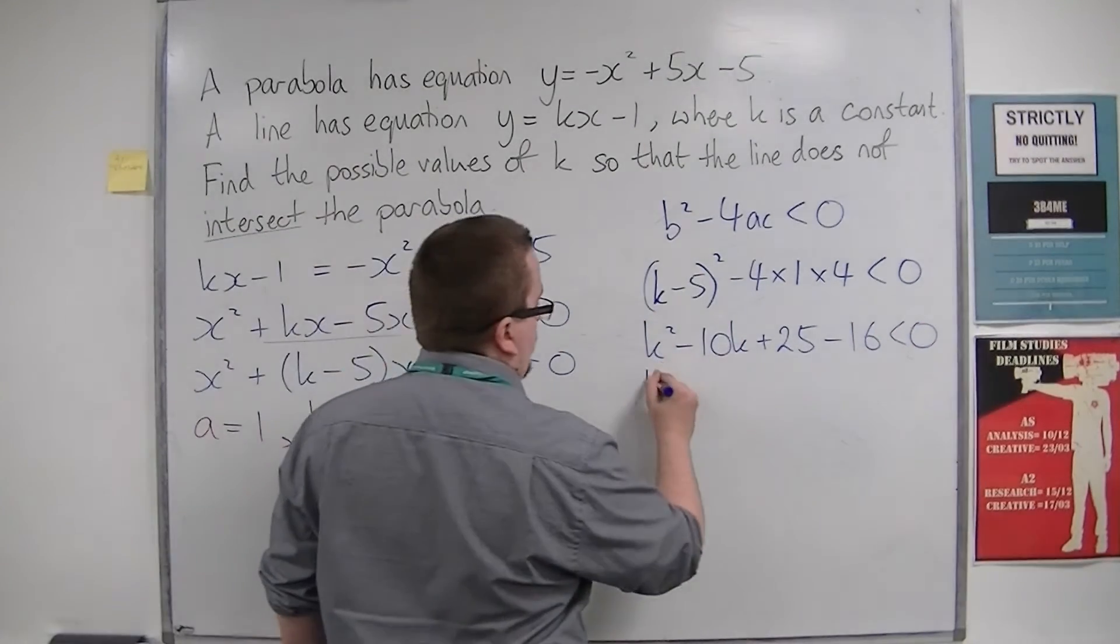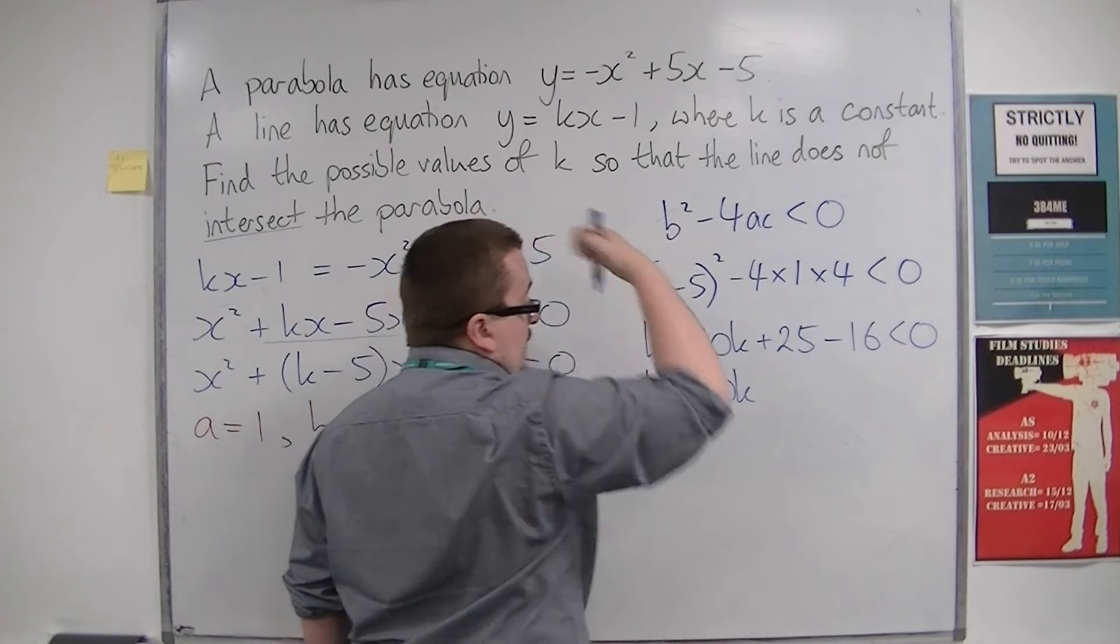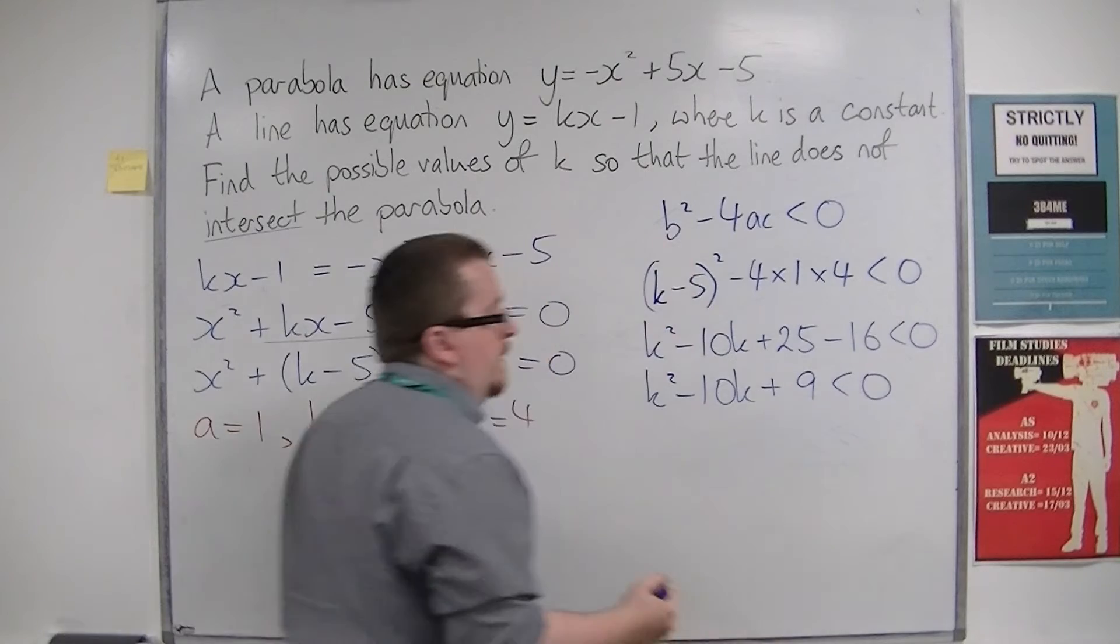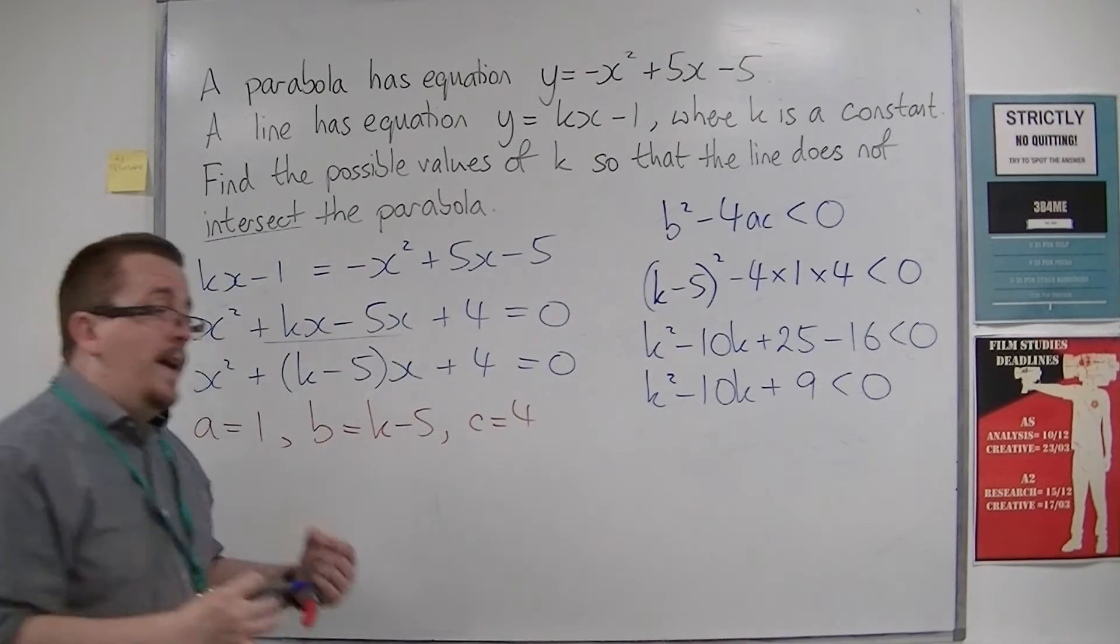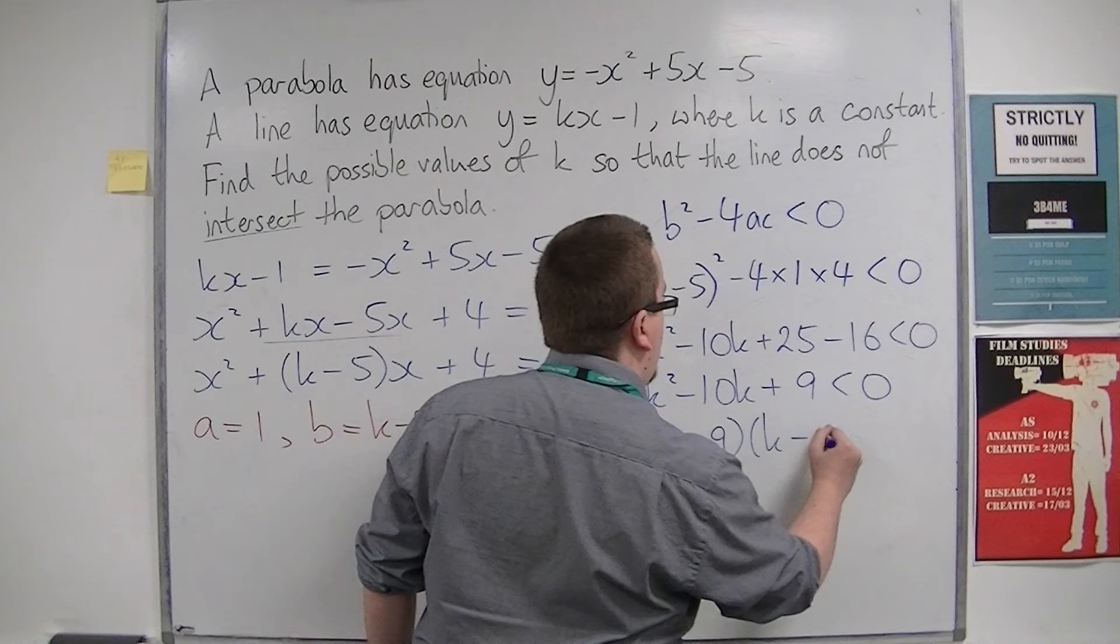Tidy that up. So 25 take away 16 is 9. That can then be factorized. So you'd have k minus 9 times k minus 1.